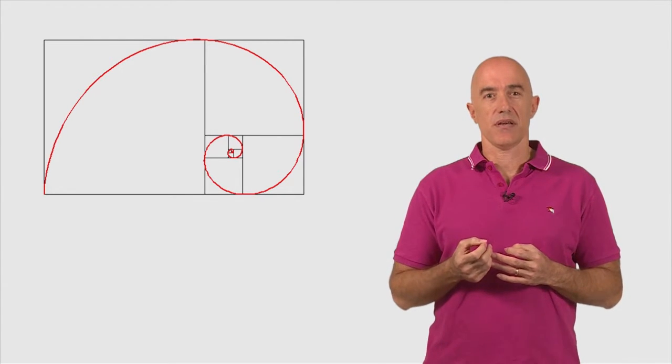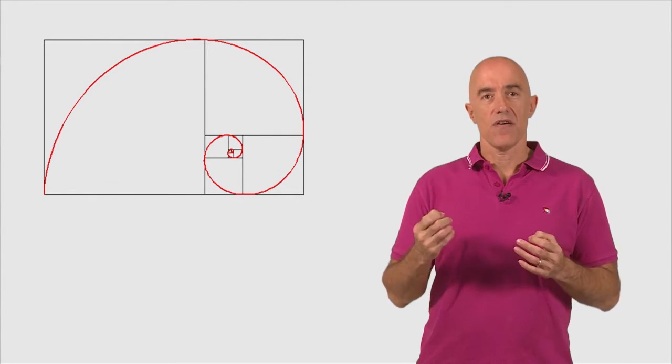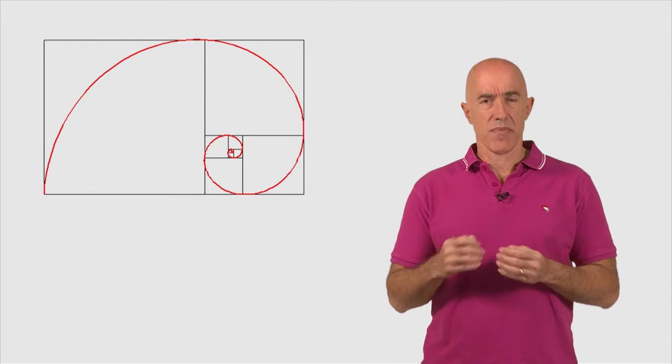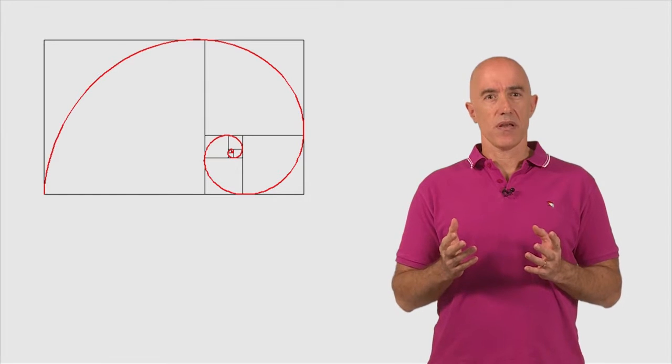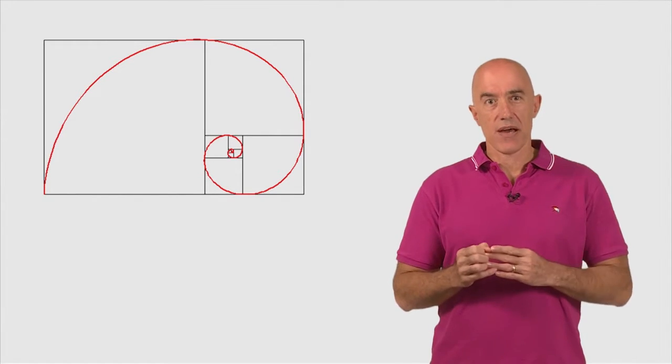That point is the accumulation point of all of the spiraling squares. How can we determine the location of that point?